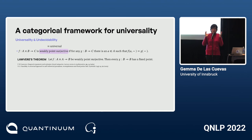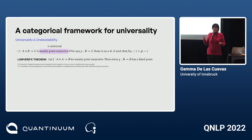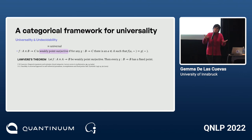Weakly point surjective is essentially like universal — we're enlarging the domain of F and choosing an element in the extra part so that F(A,−) behaves like G. Lawvere's theorem is the statement of undecidability: Gödel's theorem, the halting problem, 'this sentence is false', Cantor's theorem — all of these can be seen to follow from Lawvere's theorem.